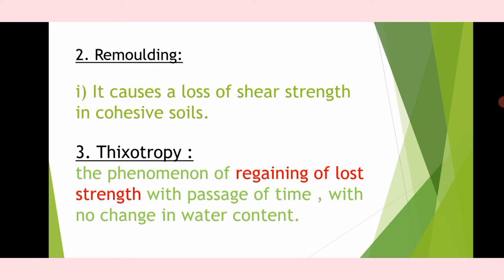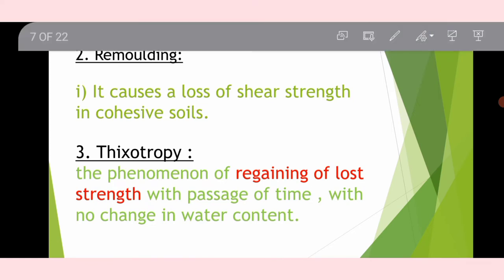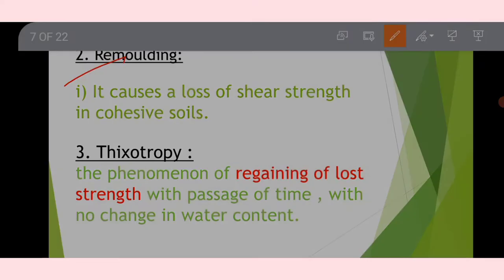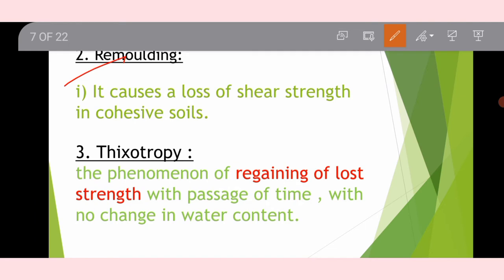Remoulding refers to the loss of shear strength in cohesive soil. Thixotropy is the phenomenon of regaining lost strength with the passage of time with no change in water content — that is, loss of strength is regained without any water content change.